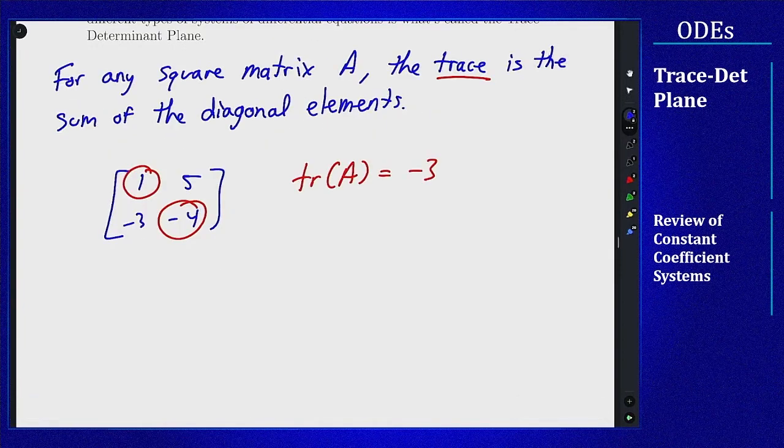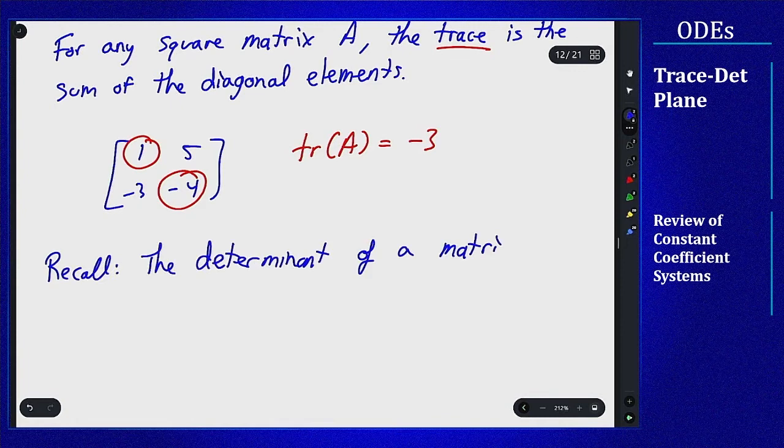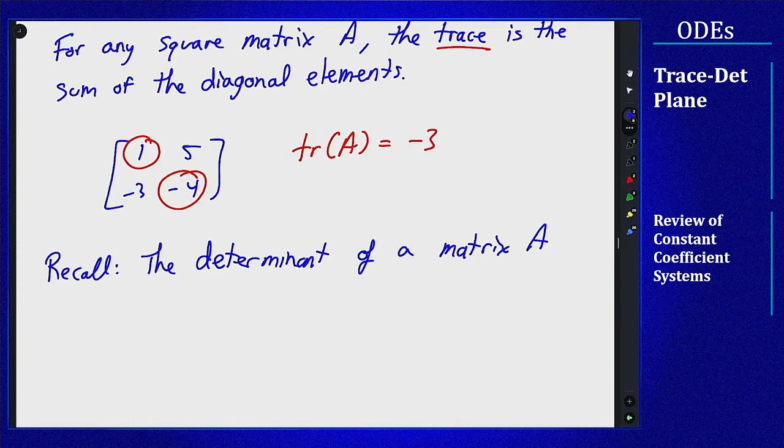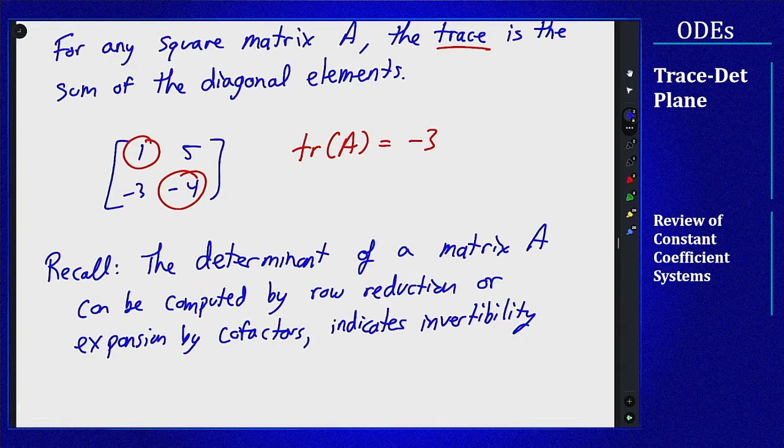Now the determinant part we already know. As a reminder, the determinant of a matrix A can be computed by row reduction or by expansion by cofactors. It indicates invertibility whether it's zero or not, and more generally gives an idea of how a matrix scales vectors.